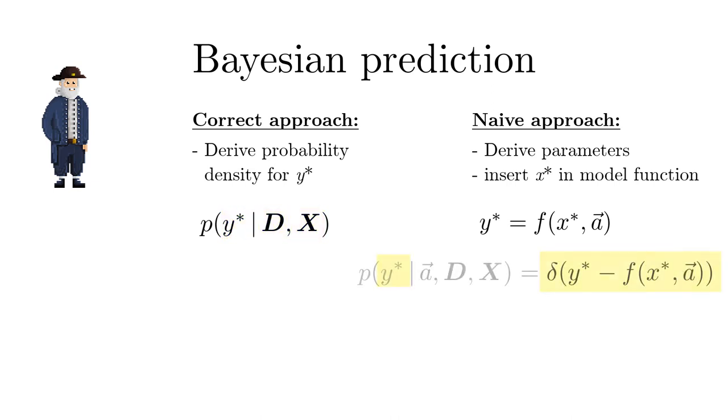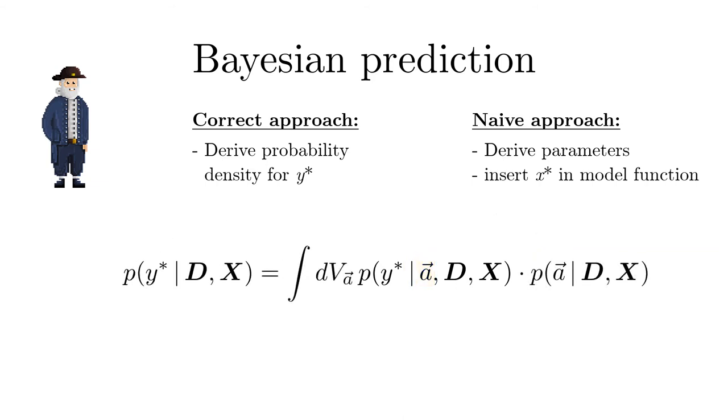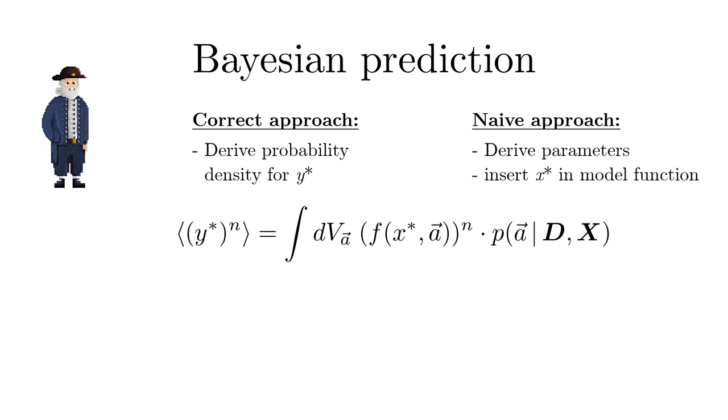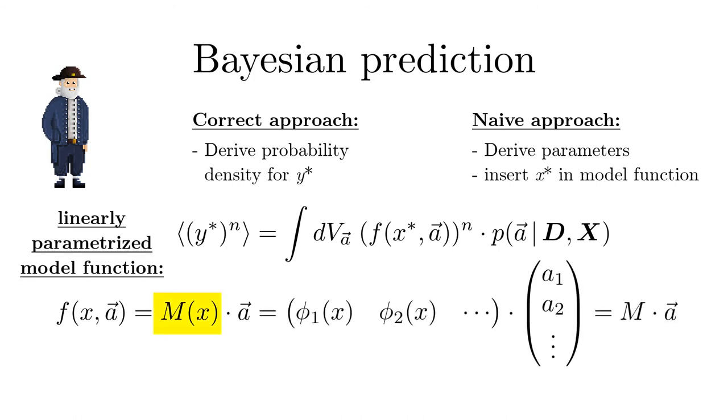We can compute Y star if we know the parameters. So we introduce them via the marginalization rule. Then the moments of Y star can be computed. The result becomes particularly simple if the model function depends linearly on the parameters, where M of X is a row vector containing the ansatz functions evaluated at X.